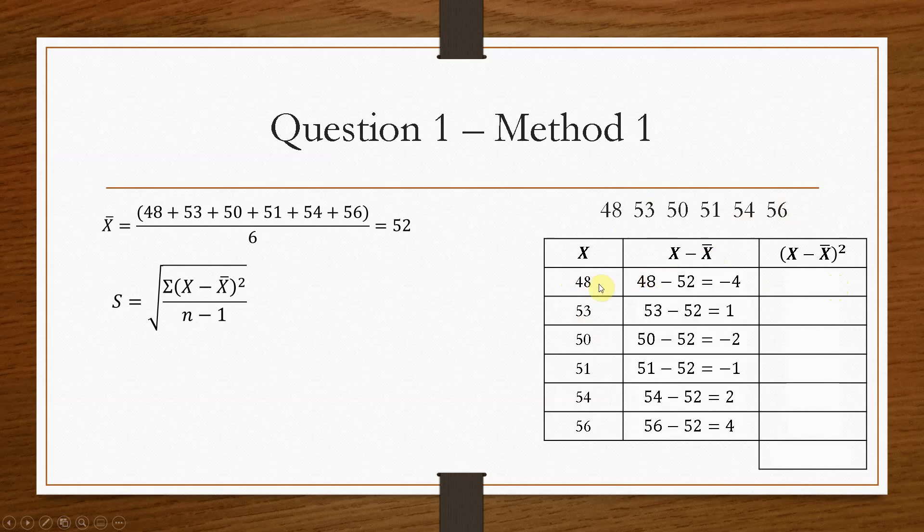And then we'll do this value minus the x bar value, which is 52. So 48 minus 52 is minus 4, 53 minus 52 is 1, and so on. So this value here, the minus 4, is what we are going to square in here. Because x minus x bar is minus 4 for this row. And we square that, we'll get 16, and so on. So we end up with a column that looks like this.